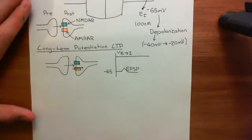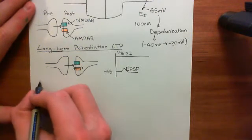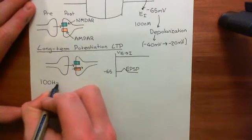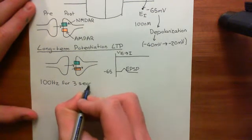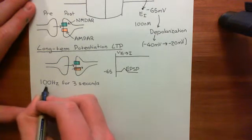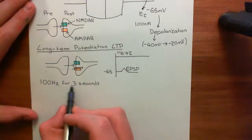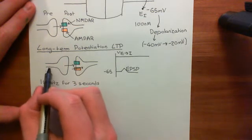Now, the phenomenon of long-term potentiation is that if we stimulate this presynaptic neuron like mad — and by 'like mad' I mean at 100 hertz for 3 seconds — this is the general protocol used. 100 hertz means that you are going to stimulate it 100 times per second. So overall, in these 3 seconds, you're going to stimulate it 300 times and it's going to fire 300 action potentials.